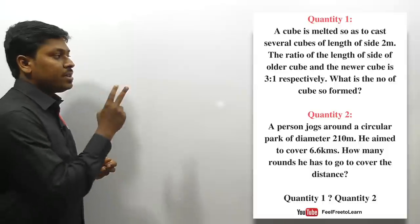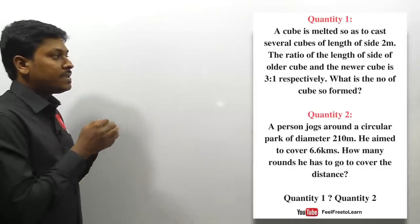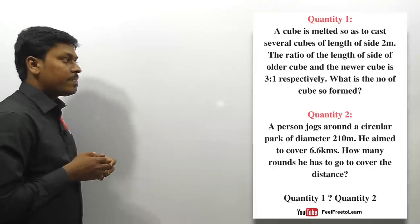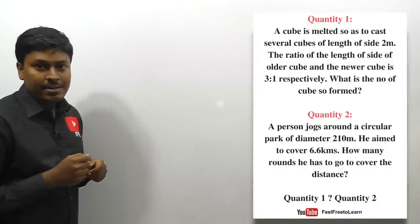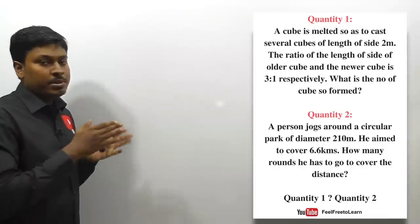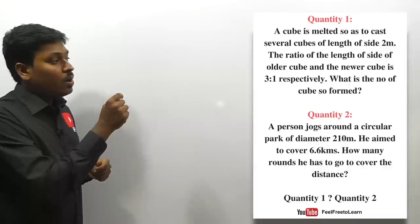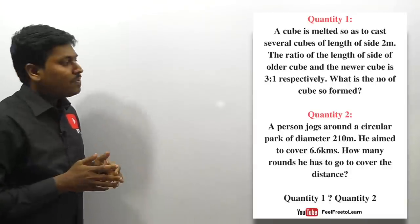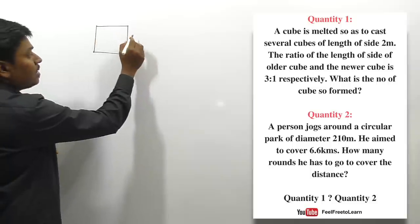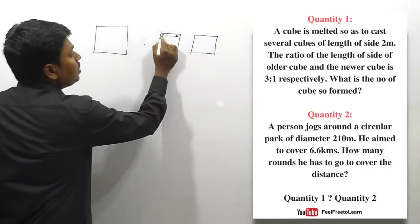Question number two: a cube is melted to cast several smaller cubes of side length 2 meters. The ratio of side length of the older cube to the newer cube is 3:1. This question is based on measurement. Since the new cube has side 2 meters and the ratio is 3:1, the older cube has side 3×2 = 6 meters.